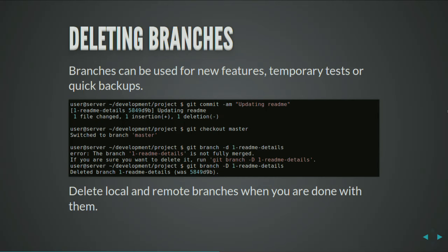Just clean up your messes — delete your branches when you're done with them. Branches can be used for new features, temporary tests, or quick backups, but when you're done it's easy to get rid of them. That way you can see what's over and what still needs to be dealt with. Git keeps track of what's been merged and what hasn't, so you have to force-delete a branch when it hasn't been merged, and when it has been merged, it's quickly deleted.